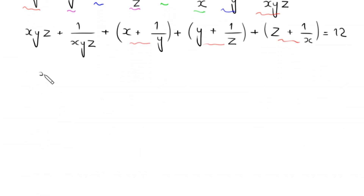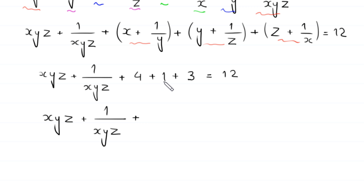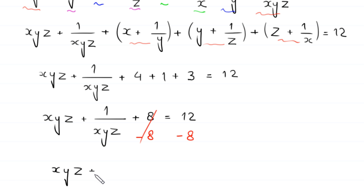So this becomes xyz + 1/(xyz) plus (x + 1/y) which equals 4, plus (y + 1/z) which equals 1, plus (z + 1/x) which equals 3, all equal to 12. Next, xyz + 1/(xyz) plus 4 + 1 + 3, which is 8, equals 12. We subtract 8 from both sides, leaving xyz + 1/(xyz) equals 4.